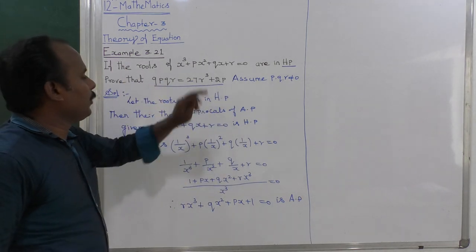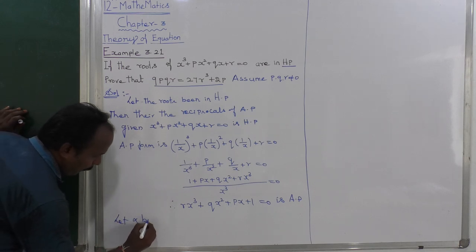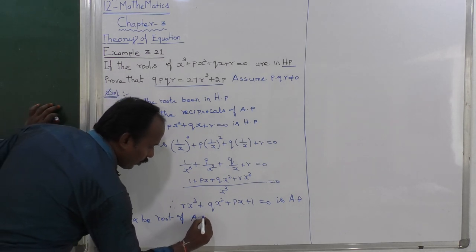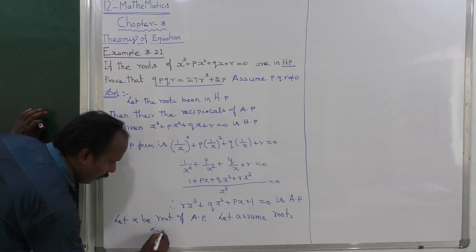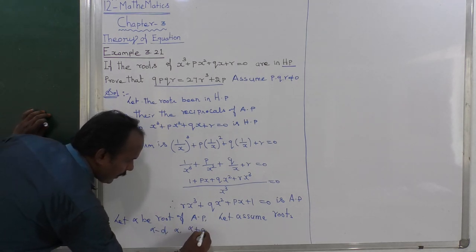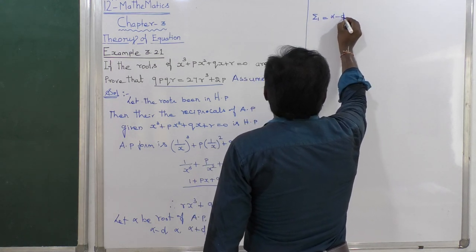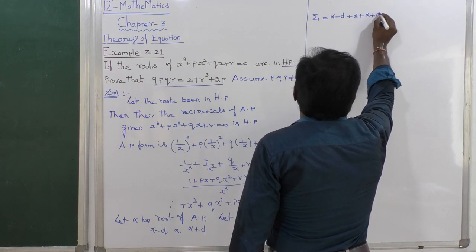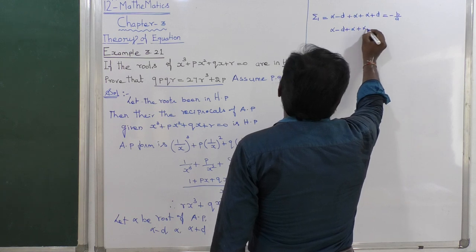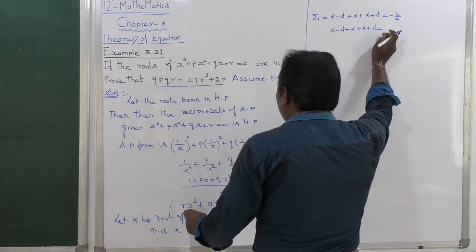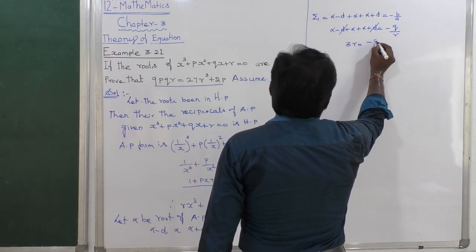So the reciprocal of HP is AP. Now let alpha be the middle root of the AP. Assume the three roots in AP as α - d, α, α + d. To find the sum of roots: (α - d) + α + (α + d) = -b/a, which gives 3α = -q/r, so α = -q/(3r). This is equation number 1.